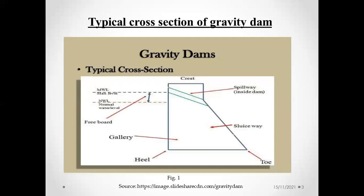Now, coming to the typical cross sections of a gravity dam. The gravity dam has a left face which is called the upstream face, and the upper portion is the crest. The right side is the downstream face and the downward part is the base. As shown in the figure, the left face which is fully vertical can be part vertical, part inclined, or fully inclined.